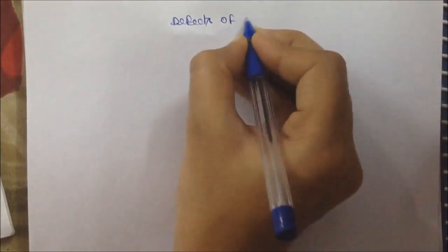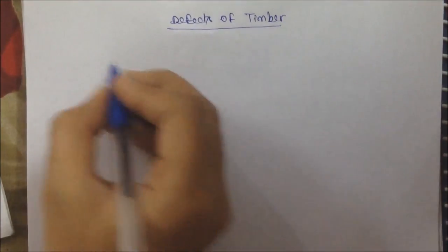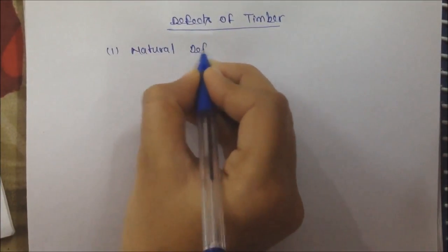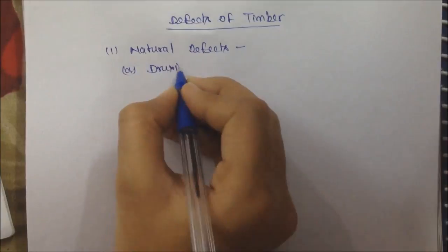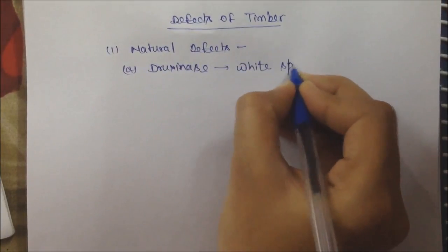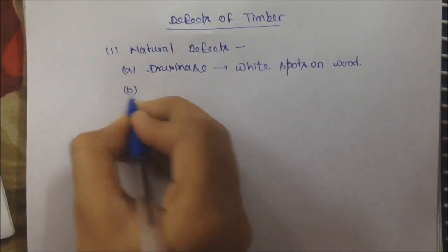Next is defects of timber. First is natural defects and second is defects due to fungi. In natural defects, first is bruxiness. There are white spots in wood which are concealed by healthy wood.